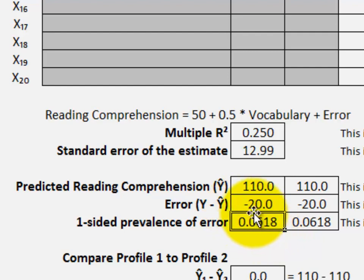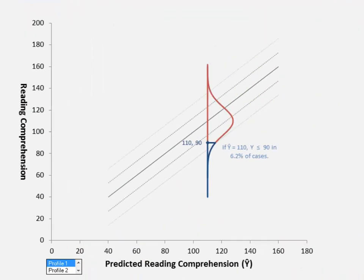The one-sided prevalence of an error of this magnitude is about 6%, meaning that about 6% of people with a vocabulary of 120 will score 90 or lower on reading comprehension. In this graph we can see the conditional distribution.